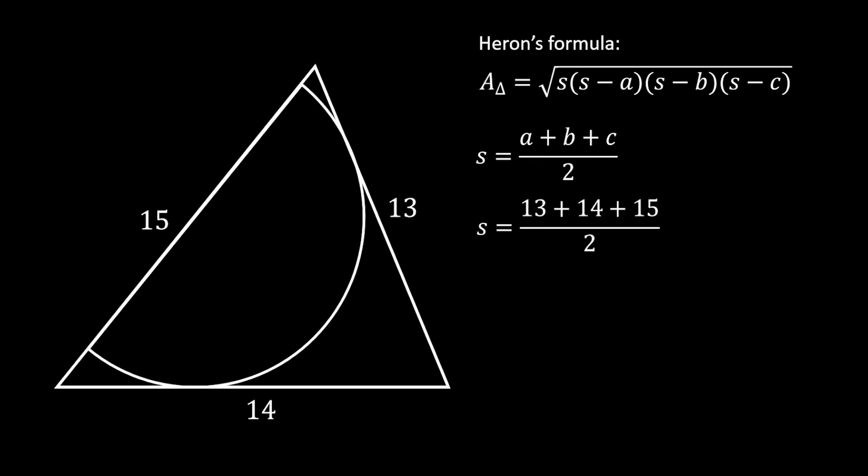We can substitute our values and get the following. From here, we will get that that is equal to 42 over 2, which means that the semi-perimeter S is equal to 21.